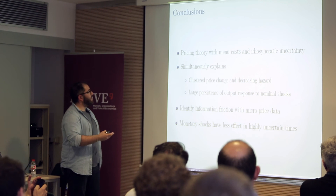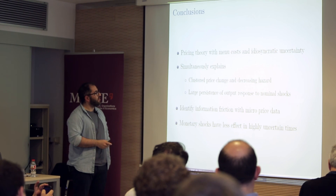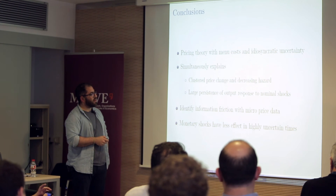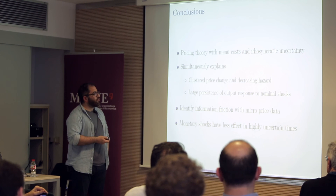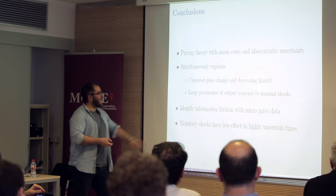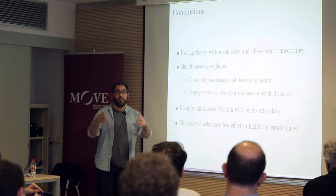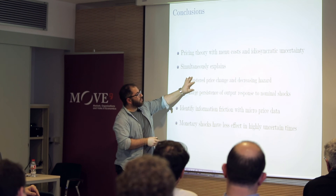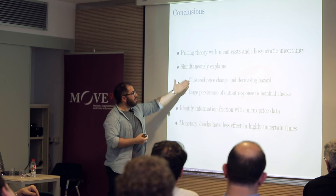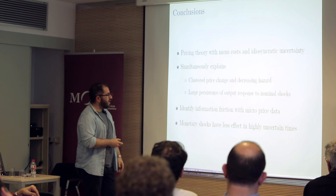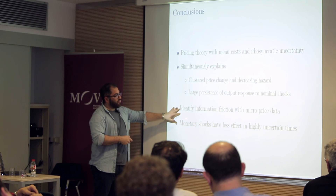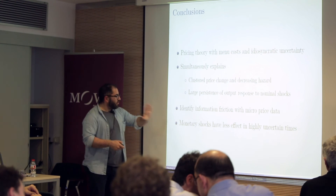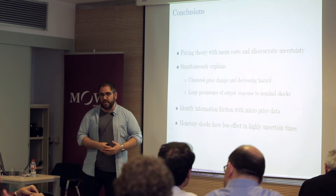In summary: a pricing theory with menu costs and idiosyncratic uncertainty simultaneously explains clustered price changes and decreasing hazard rates in the microdata, delivers larger persistence of output responses to nominal shocks — five times more than Golosov-Lucas — and generates the result that monetary policy has less effect in highly uncertain times. The information friction is identified and pinned down using microdata on the slope of the hazard rate.